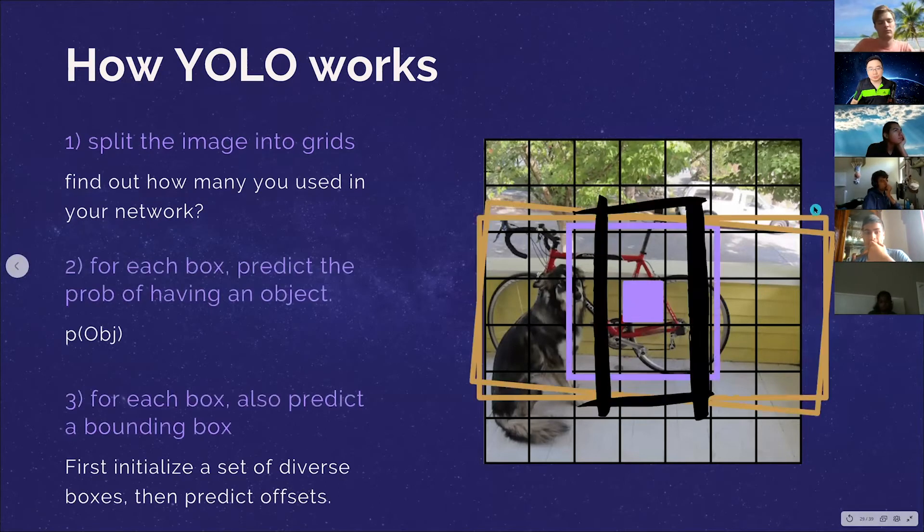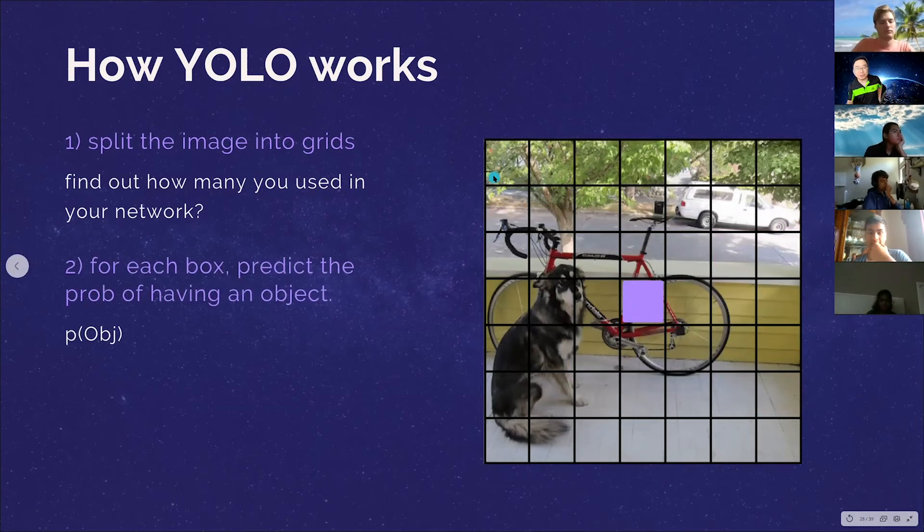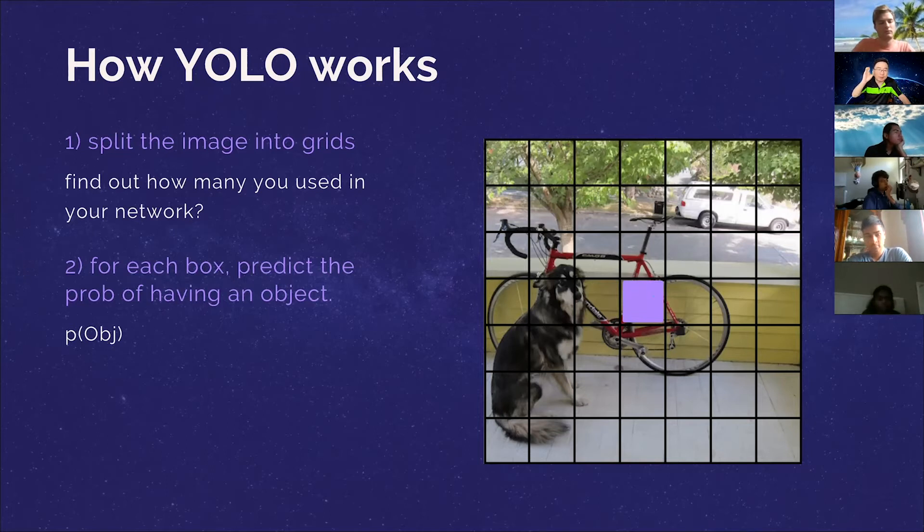And then the second thing you need to do is basically for each of these little boxes, you predict the probability of having an object, right? No more or less. It's just predicting whether I have an object or not. Not predicting, for example, whether this is going to be like a bicycle or a dog or a fan. I don't care about that. I'm just trying to get a sense that if this whole region is anything interesting or not. Very simple. Predict if there's an object in that little box.